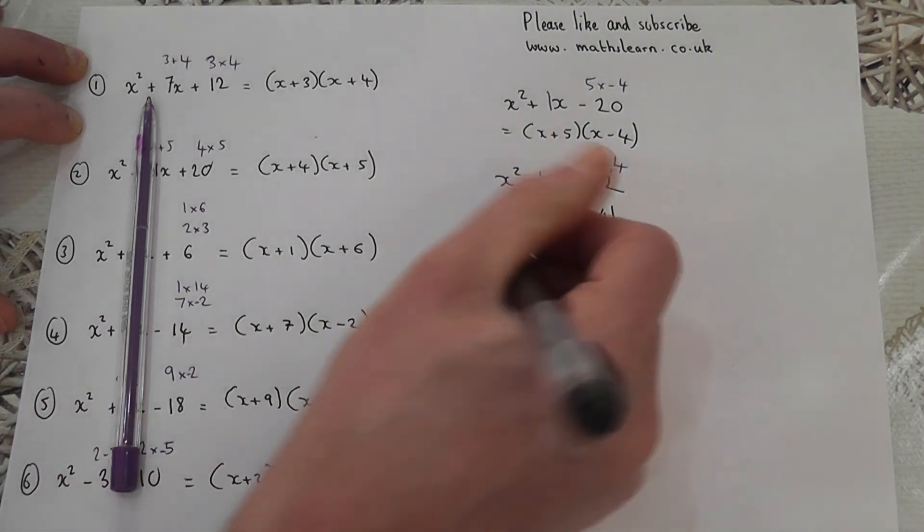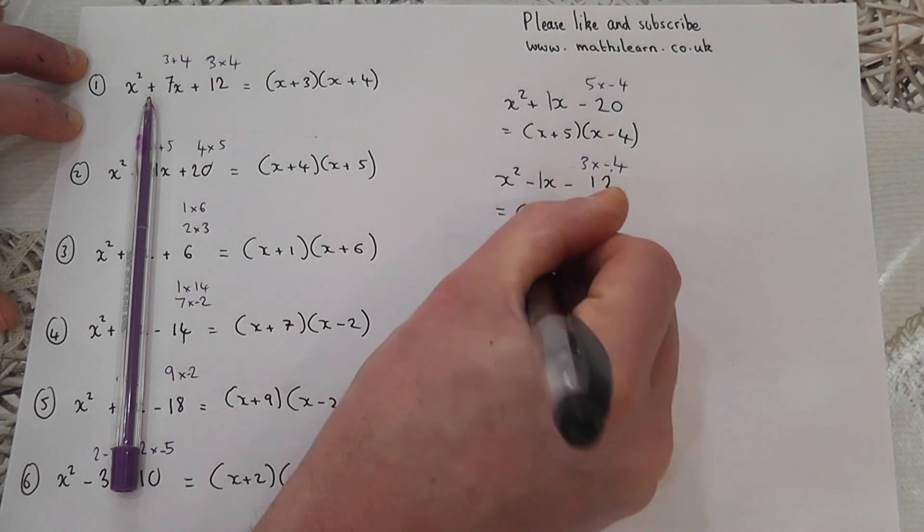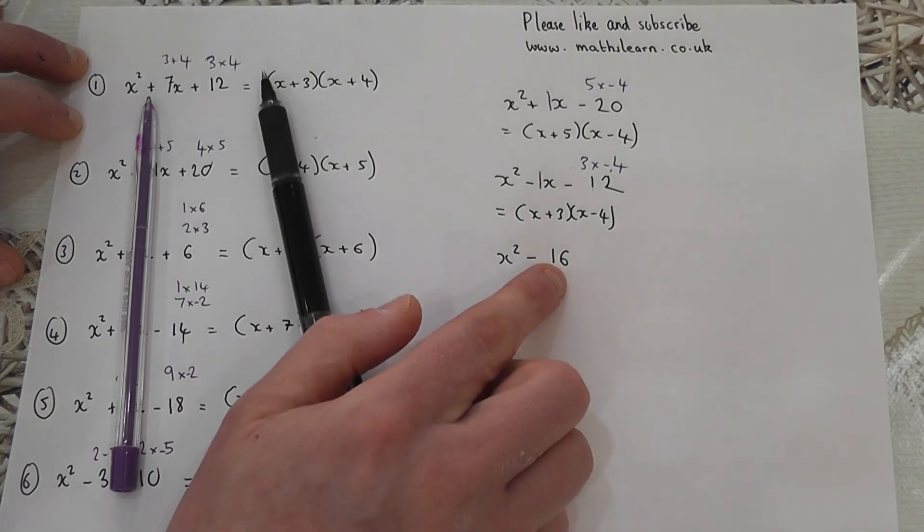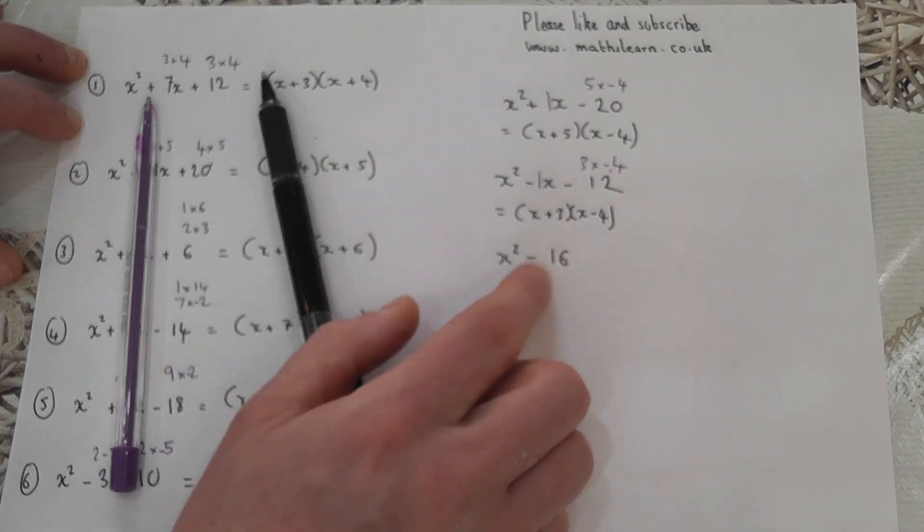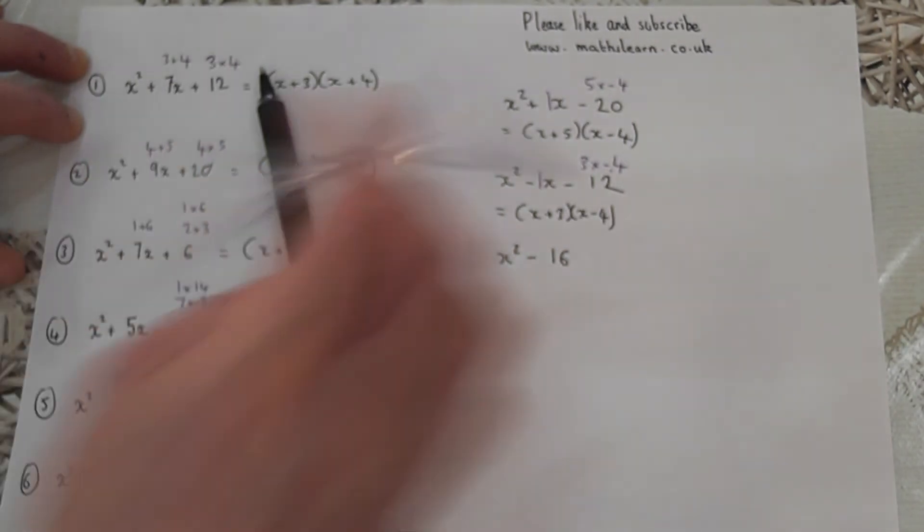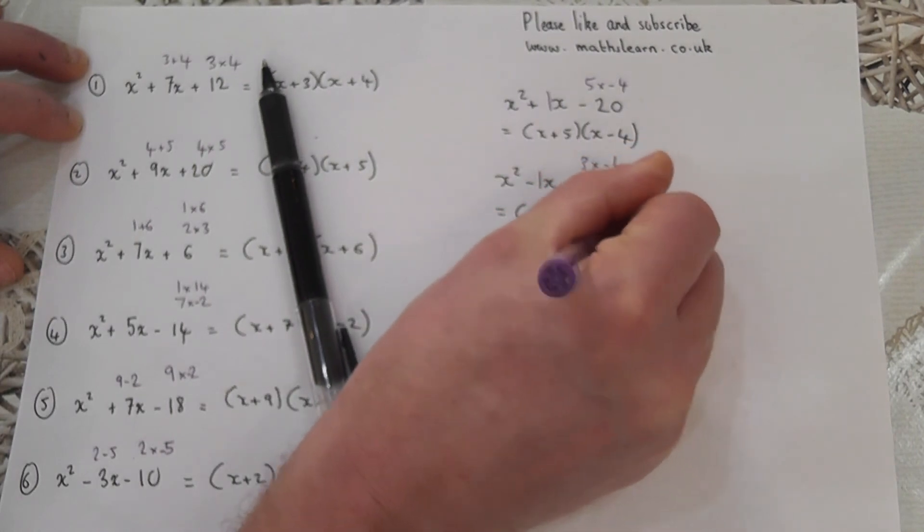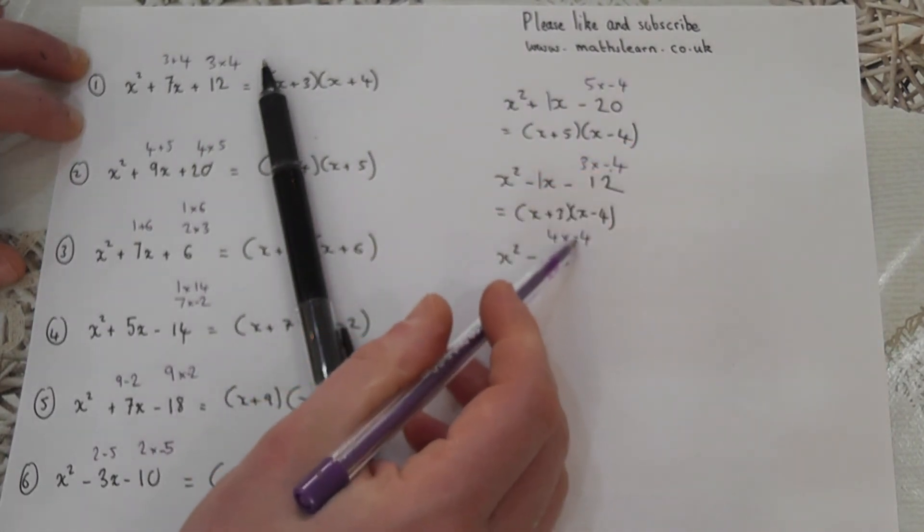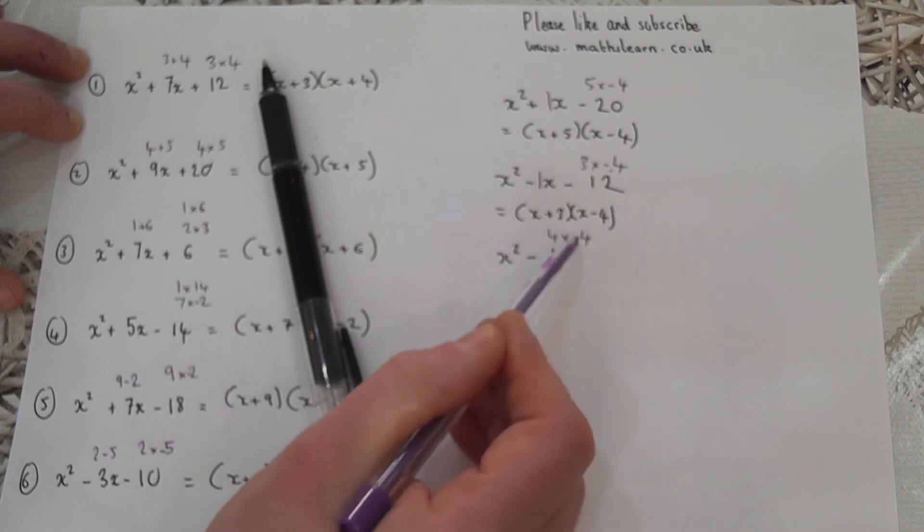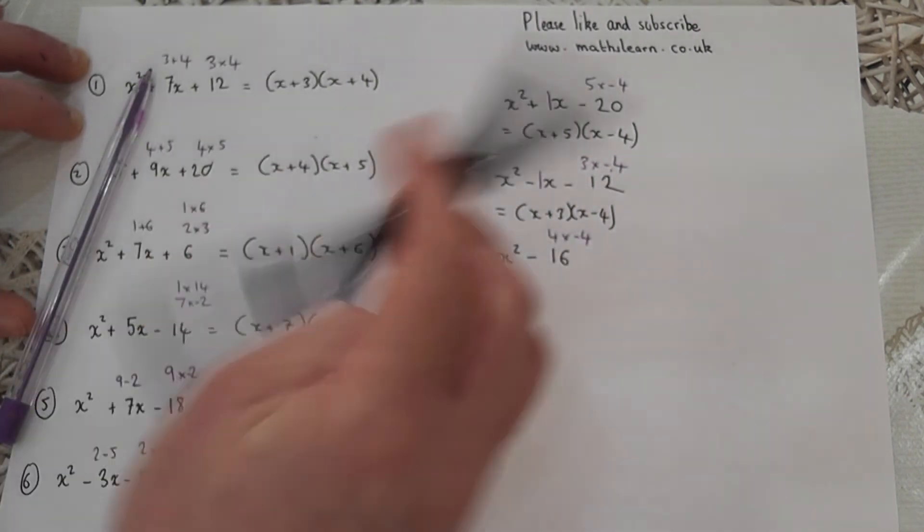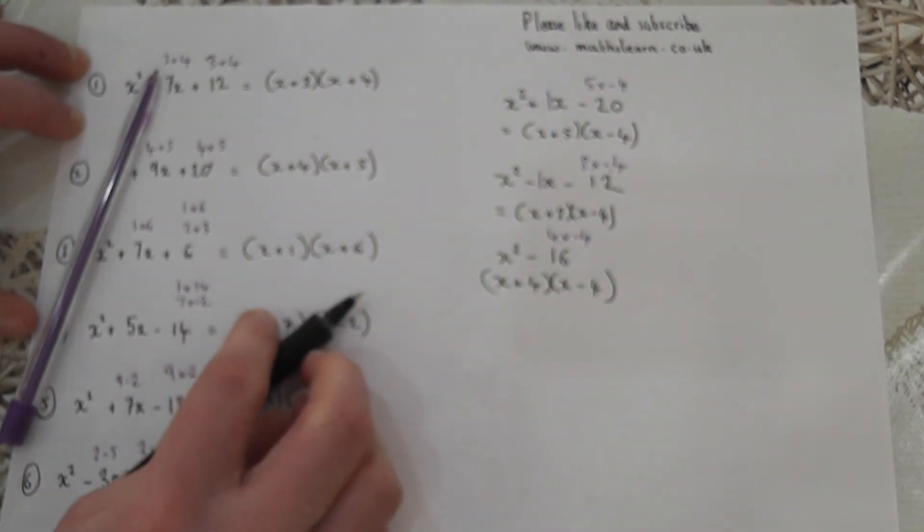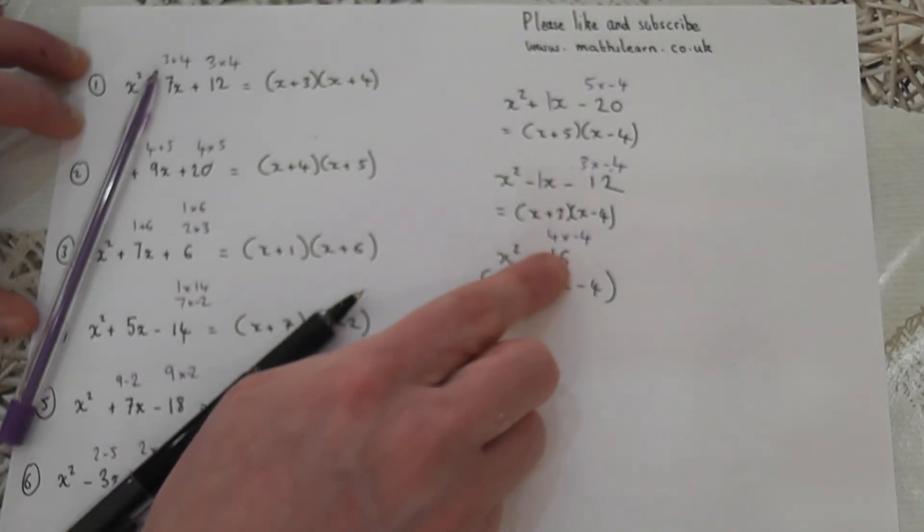Last special case: when there's no x term. For example, x squared minus 16. These can be factorized easily when the number there is a square number. This works because a factor pair of 16 is 4 and minus 4, and 4 take away 4 is nothing. In other words, the x term cancels out. If the factor pair is the same number, the x term cancels, so it becomes x plus 4 and x minus 4. This works when there's no x term and the number is a square number.